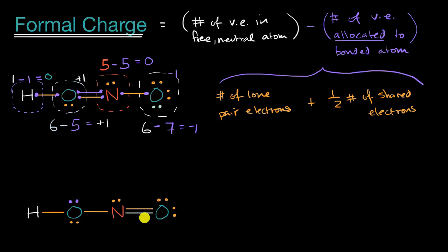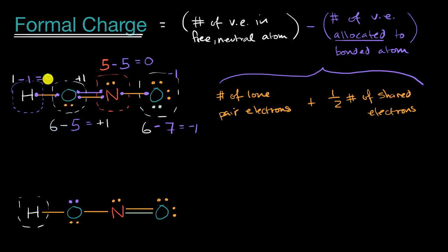Now let's look at the second configuration. This hydrogen is identical to the first one — it has no lone pair electrons and just one covalent bond to an oxygen — so the same analysis gives a formal charge of zero.